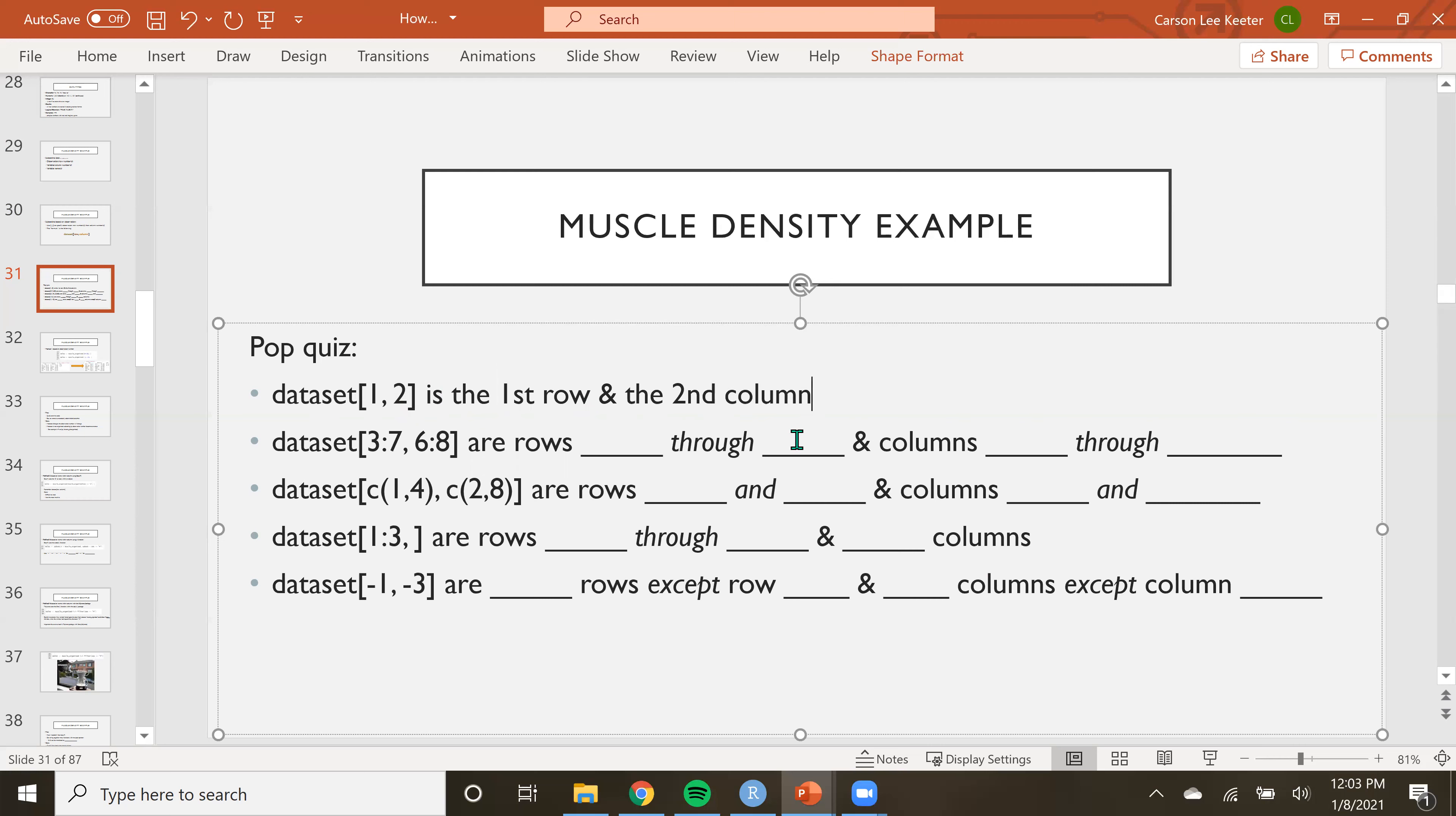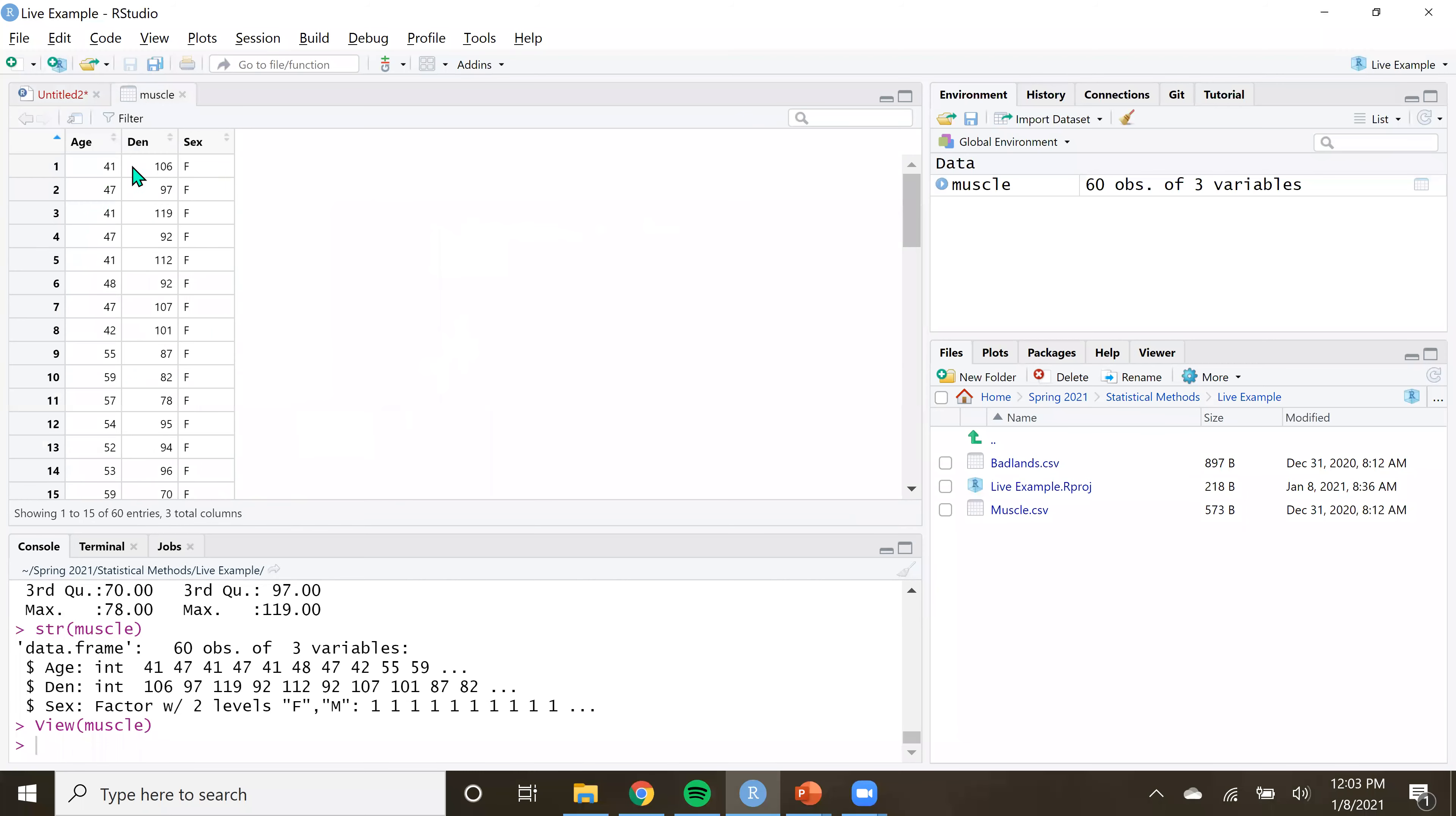Now, what does that look like in our data? And I'm not going to do it for each one going back and forth between R, but I will just for this first one. So we can kind of get an idea of what we're doing. Right. So data set one comma two is the first row and the second column. So if I were to come back here, first row and second column, I don't care about anything that's not the first row. And I don't care about anything that's not the second column. Which turns out to be this 106, right?